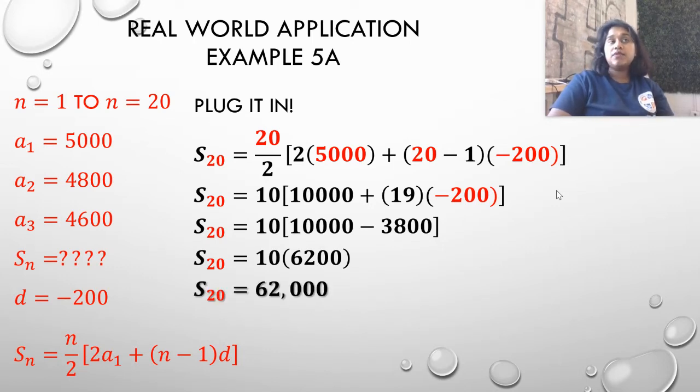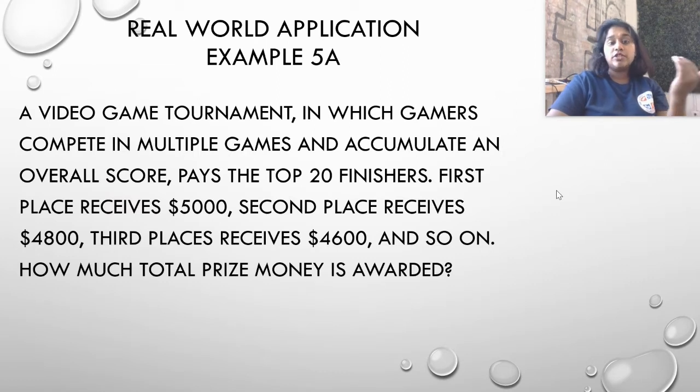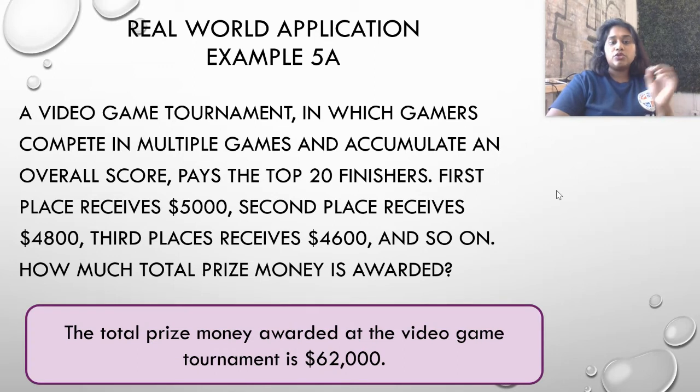Does that make sense? If we added 5,000 plus 4,800 plus 4,600 and so on and so forth, would we get a large value like 62,000? It does make sense, so I'm going to put it back into its sentence form. They gave us the stem sentence, how much total prize money is awarded, so I'm going to use that sentence. The total prize money awarded at the video game tournament is $62,000. Ta-da!